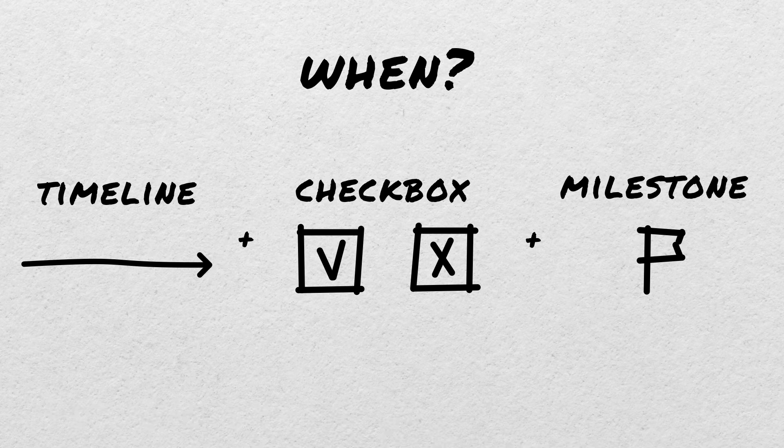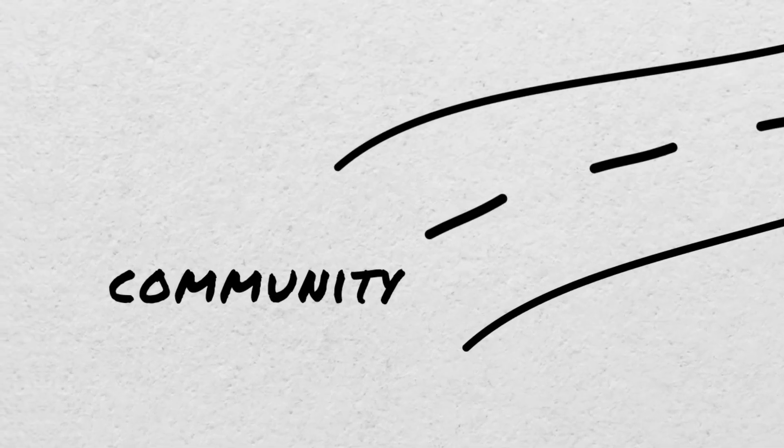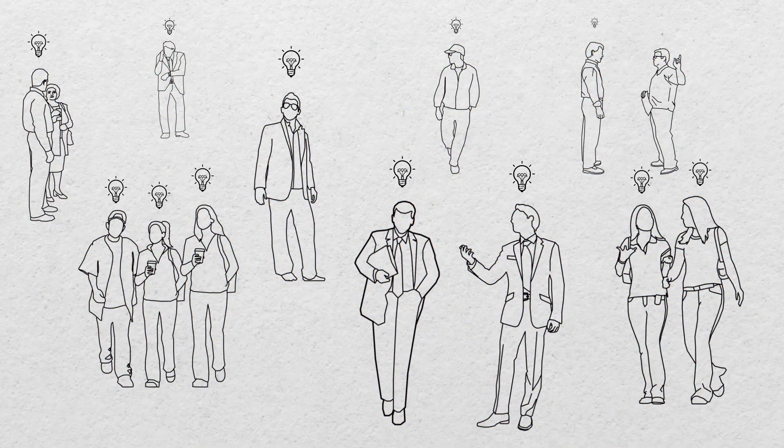When to start writing a plan? In Web3, you often need to build a community first and only then a product. Invite the most ideologically motivated people and draft together a plan of action. Start with the basic things mentioned above. The decisions about tokens, NFTs, and governance systems can wait. Focus primarily on value creation at this point.